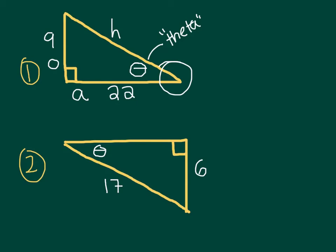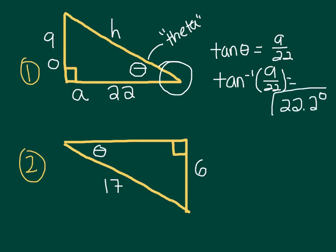I have the hypotenuse and then my opposite. It looks like I know my opposite and adjacent, so therefore I'm gonna use the tangent. So tangent of theta equals 9 over 22. Now this is when we need to remember to use the inverse tangent. So tan⁻¹ of 9 over 22, and this is gonna return the angle to me. And I get 22.2 degrees. Seems pretty reasonable.